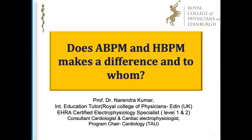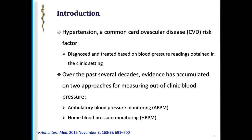Hi everyone, we are going to speak about the different ways to measure blood pressure. There's always a big confusion about how to use those methods to accurately measure it. We are all very much aware that hypertension is indeed a very common cardiovascular disease and a big risk factor. To diagnose hypertension we check blood pressure readings, most often in clinical settings. With times changing, two types of out-of-clinic blood pressure measurements have emerged: ambulatory blood pressure and home blood pressure monitoring.